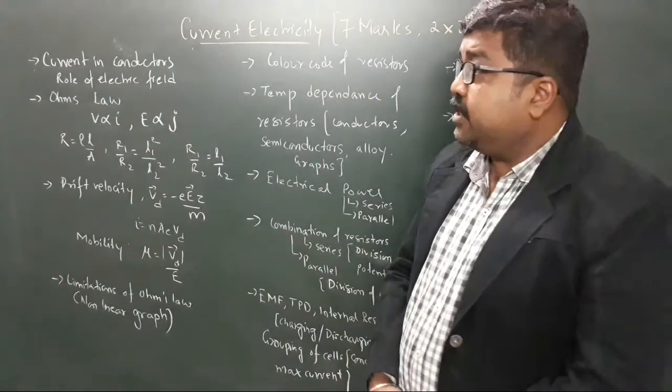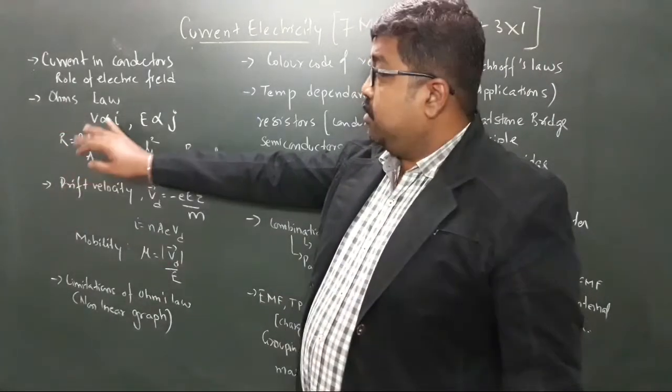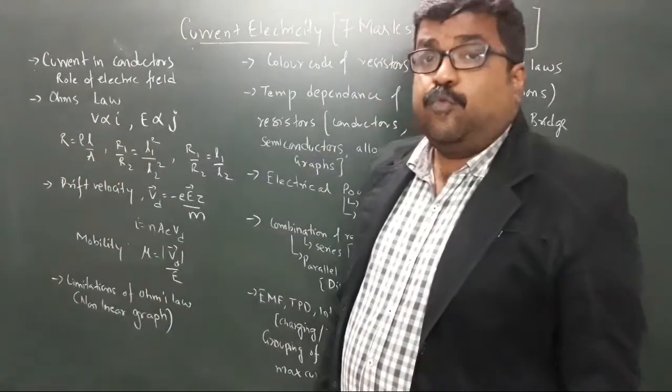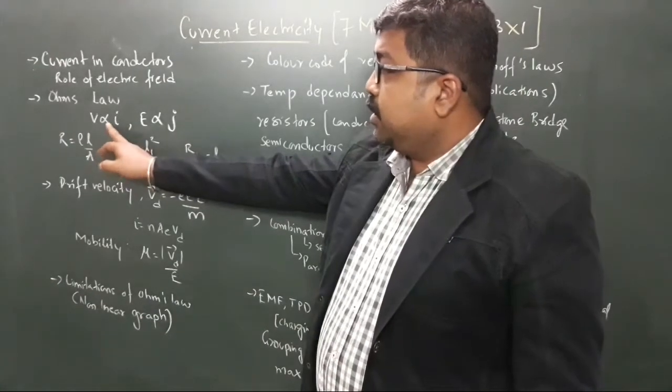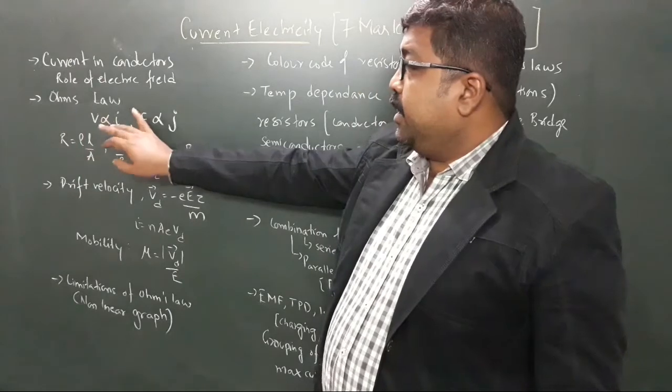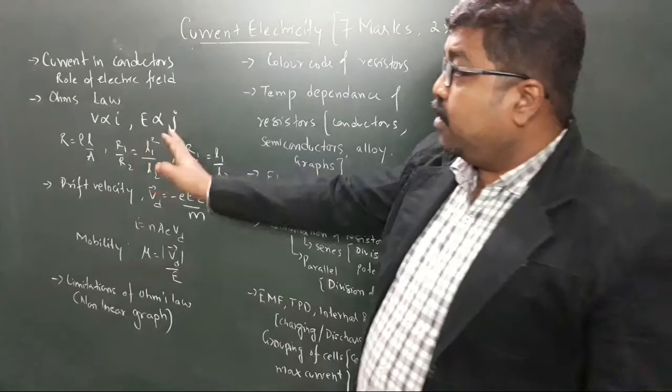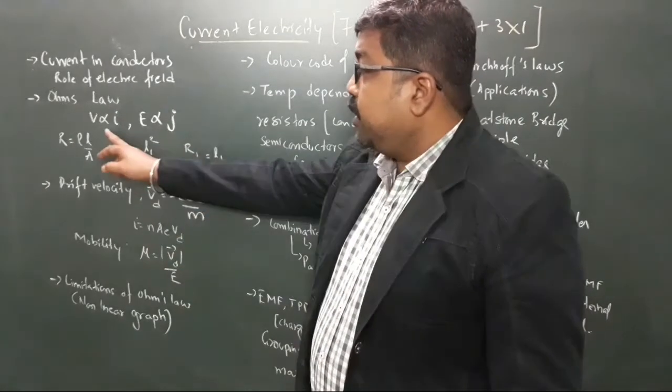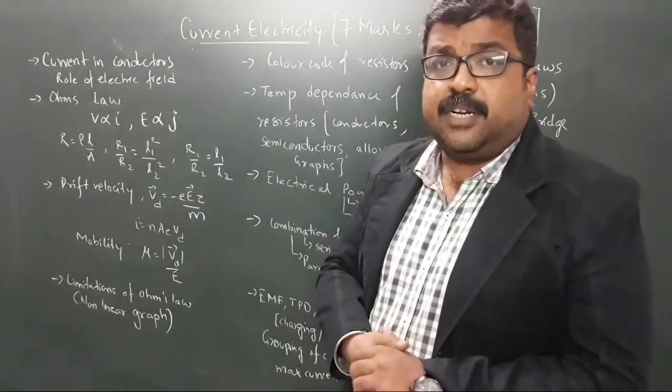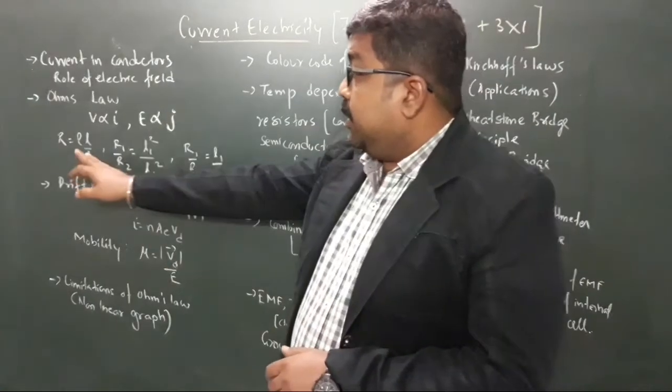Then you have Ohm's law, which is expressed in two forms: V is proportional to I, that is potential difference is proportional to current, and electric field strength is proportional to current density. These are the two forms of Ohm's law, and the proportionality condition is that physical conditions like temperature and pressure remain constant.